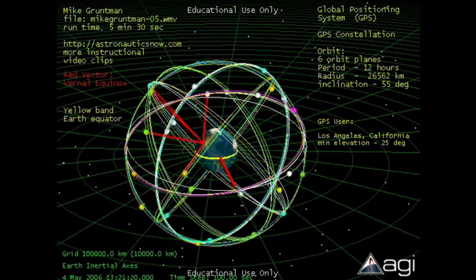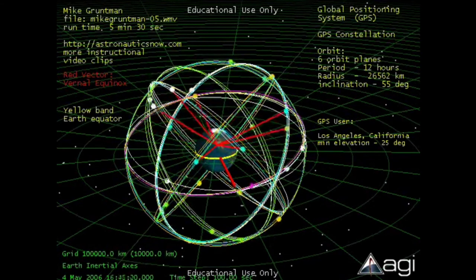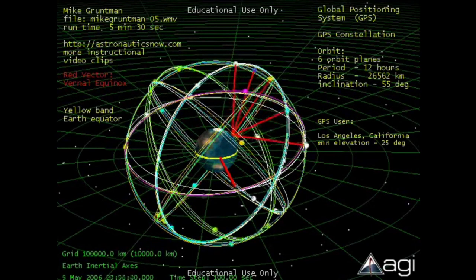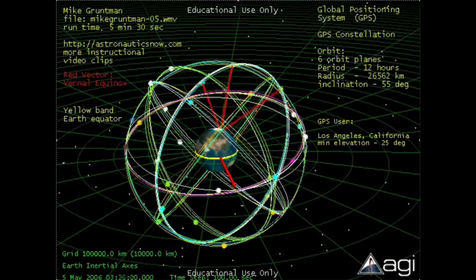As we have already mentioned, in order to find our position, we need to be able to see four different GPS satellites at the same time. And here is a view of the sky from Los Angeles, California. And as you can see, at all times, there are at least four GPS satellites visible from LA.